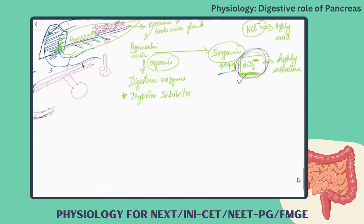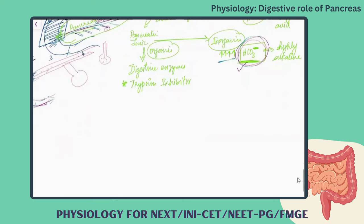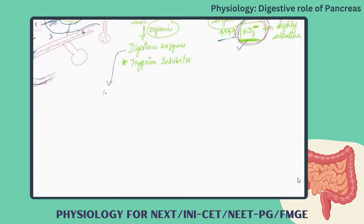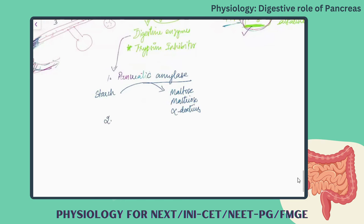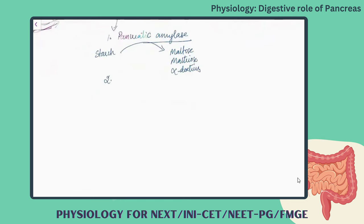Now let's look at the digestive enzymes in pancreatic juice. The first enzyme is pancreatic amylase, which digests carbohydrates. It converts starch into maltose, maltotriose, and alpha dextrins. The second group is all other digestive enzymes, which remain in their proenzyme form and are converted into active forms.